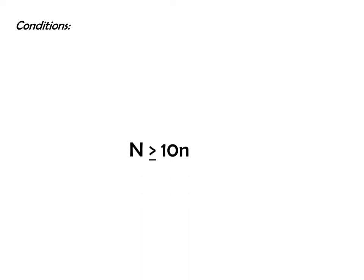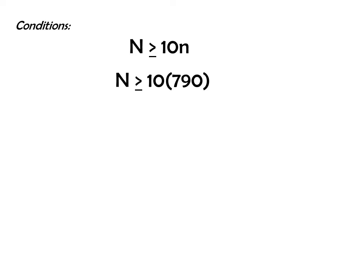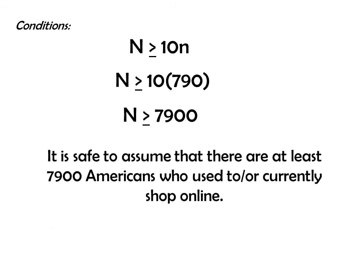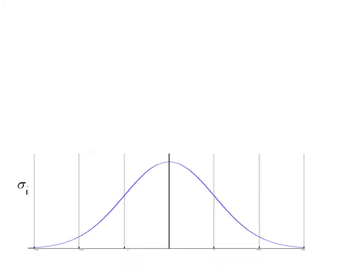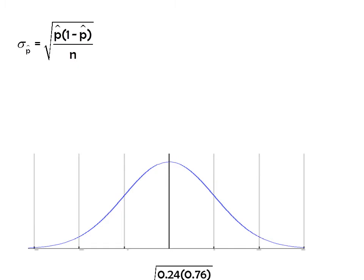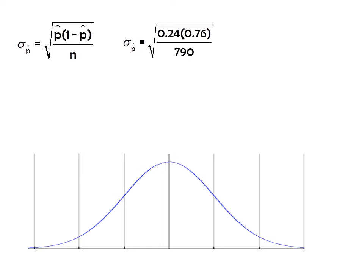Our other condition is to check for independence — we need to make sure that our population is at least 10 times larger than our sample. Our sample size is 790, so is our population greater than or equal to 7,900? It's safe to assume there are at least 7,900 Americans who used to or currently shop online. Since this is fulfilled, we can use our formula for standard deviation. Using p-hat in place of p, our standard deviation is approximately 0.02, or 2%.